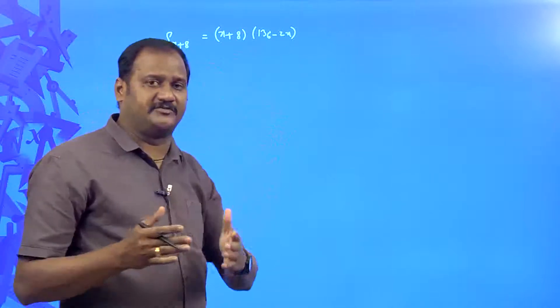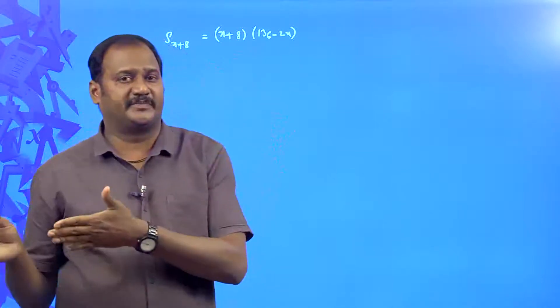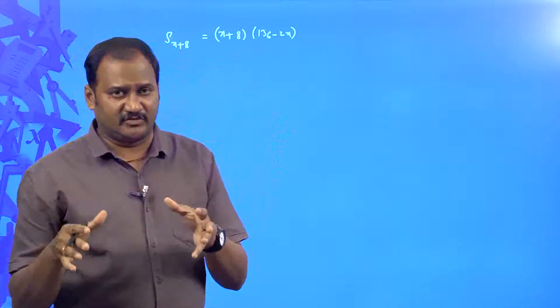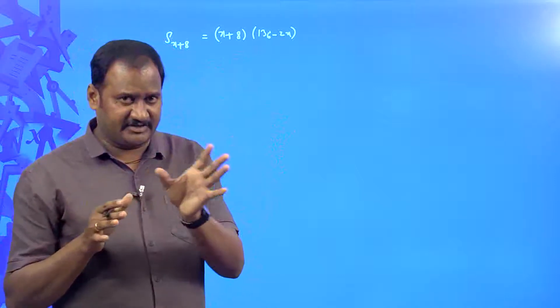According to the given problem, if 150 workers were engaged throughout the working period, then they can finish it in x days. So the total work according to that condition is 150 into x.